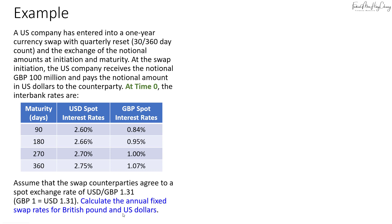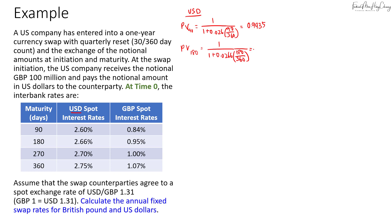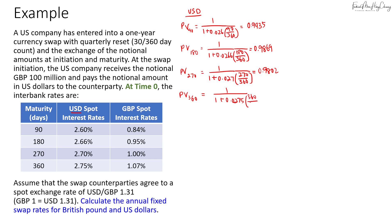Similar to pricing interest rate swaps, let's start with the USD side. The PV factor for 90 days is 1 divided by (1 + 0.026 × 90/360) = 0.9935. For 180 days: 1 / (1 + 0.0266 × 180/360) = 0.9869. For 270 days: 1 / (1 + 0.027 × 270/360) = 0.9802. For 360 days: 1 / (1 + 0.0275 × 360/360) = 0.9732.